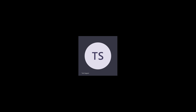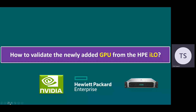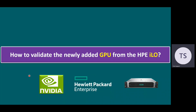Hi, everyone. Welcome to Gnan Cloud Garage. In this session, I'm going to talk about how to validate the newly added GPU from the HPE ILO. ILO means Integrated Lights Out. This ILO is helpful to manage the HPE servers remotely.